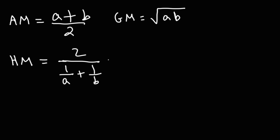If you rearrange the harmonic mean equation by multiplying the top and bottom by ab, it becomes 2ab divided by (a plus b) — that is, twice the product of a and b divided by the sum of a and b. That's how you find the harmonic mean of two numbers.